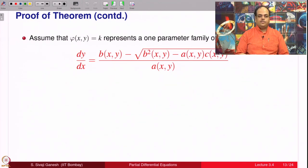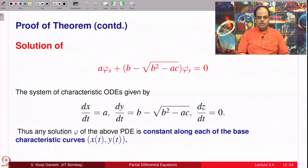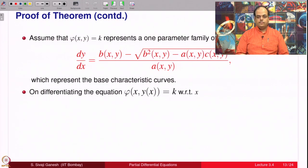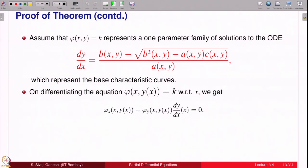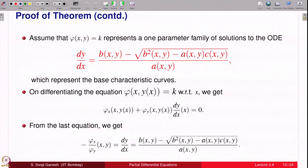Assume that φ(x, y) = k represents a one-parameter family of solutions to this ODE, which is a non-parametric expression of the base characteristic curves. On differentiating φ(x, y) = k with respect to x — assuming there is a hidden solution of this ODE — we get by chain rule that −φ_x/φ_y equals a certain expression. We need this to show that the chosen φ and ψ give a valid change of coordinates.